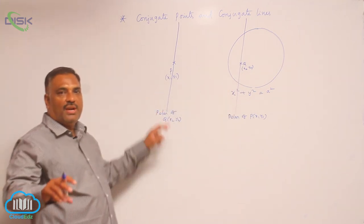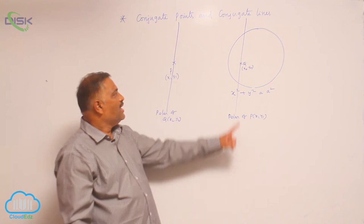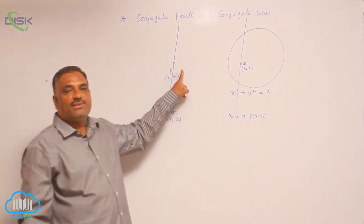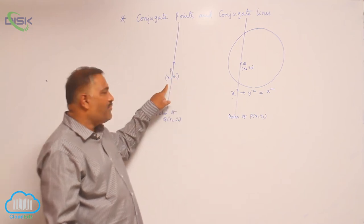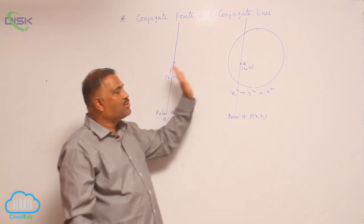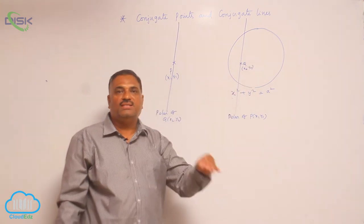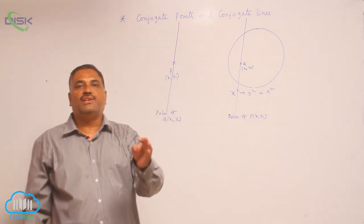Otherwise, we can simplify the definition. Two points p and q are said to be conjugate points if polar of either point passes through the other. Since polar is a straight line, its nature is to pass through.